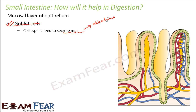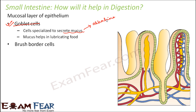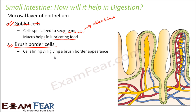There is another set of cells called brush border cells. Mucus also helps in lubricating food — that is by default because mucus is a slimy substance. Now, brush border cells — the name is quite different. Let us see what they are: cells lining the villi giving a brush border appearance are called brush border cells.